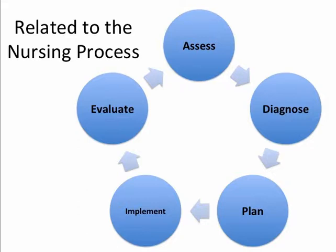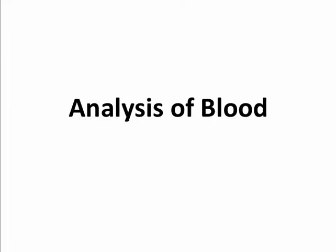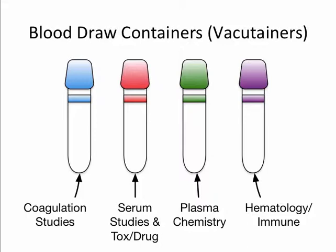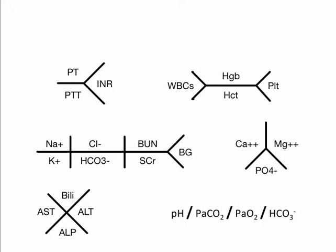Let's begin by looking at laboratory tests that can be done on blood. When blood is drawn, either by you or a phlebotomist, it is collected in a container called a vacutainer of a specific color. The specific color is universal and correlates with particular studies. The difference in these containers is the medium inside the tube. The labs we will be discussing can be organized into what are referred to as fishbones — simply a method for organizing patient labs. The following are the six fishbones we will be exploring.